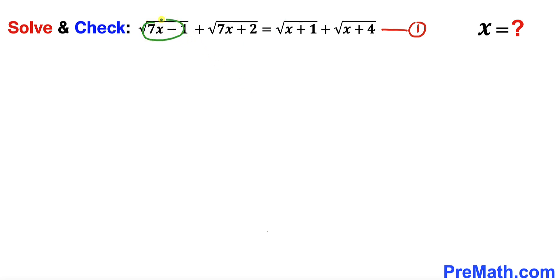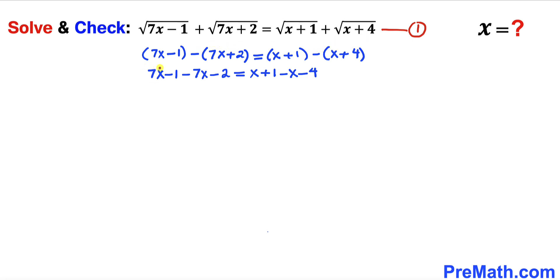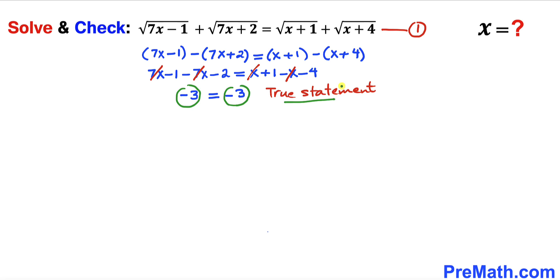Let's focus on the radicands inside all of these square roots. Writing them down: (7x minus 1) minus (7x plus 2) on the left, and (x plus 1) minus (x plus 4) on the right. After distributing the negative signs, the 7x terms cancel on the left and the x terms cancel on the right, leaving negative 3 equals negative 3 — a true statement. So we are going to manipulate this equation further.